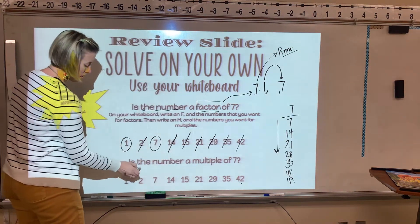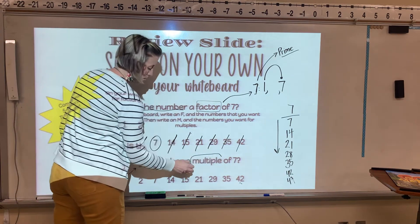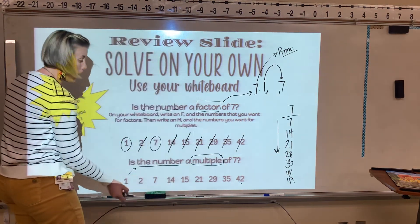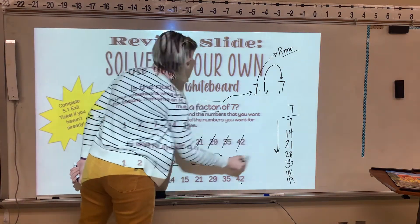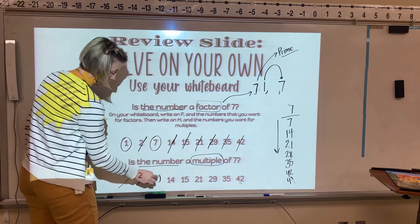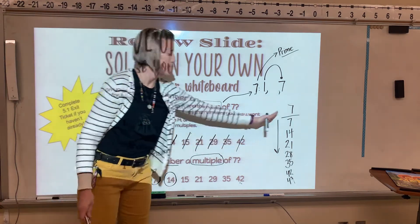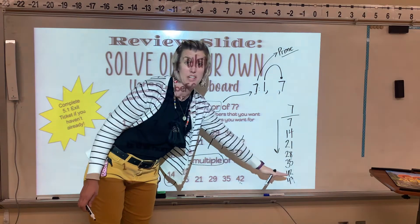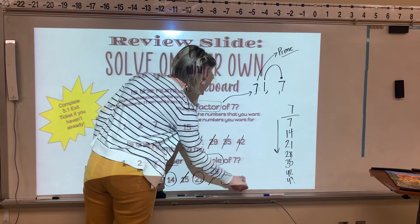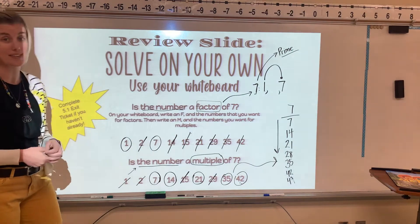So, is the number a multiple? The multiples are the list. Is 1 a multiple of 7? No. Is 2 a multiple of 7? No. Is 7 a multiple of 7? Yes. Is 14 a multiple of 7? Yes. I already made my list ahead of time, so I don't have to go back and think about that again.